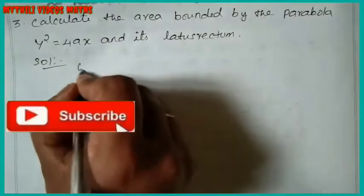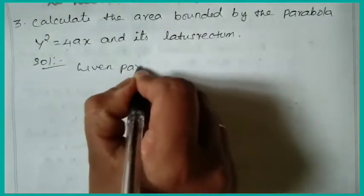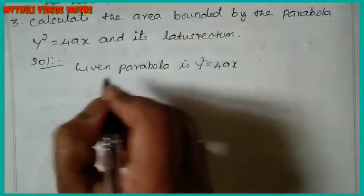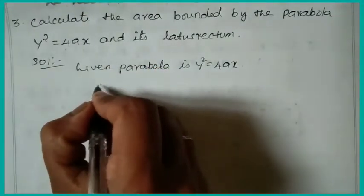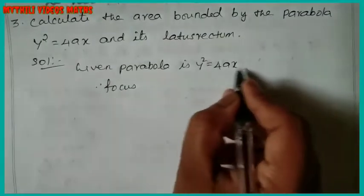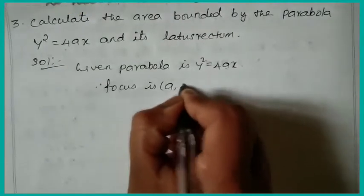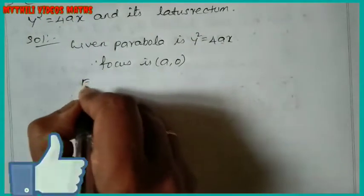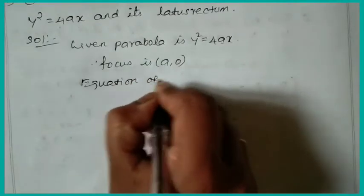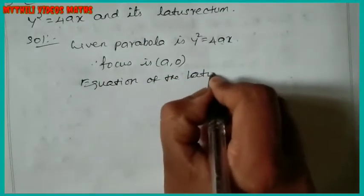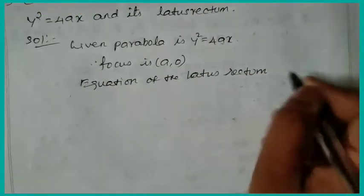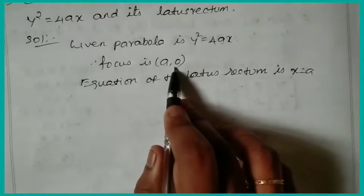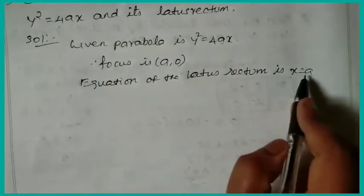Solution: the given parabola is y² = 4ax. The focus is at (a, 0). The equation of the latus rectum is x = a. This is the formula we know — focus is at (a, 0) and the equation of the latus rectum is x = a.